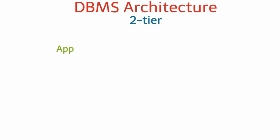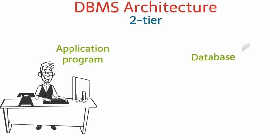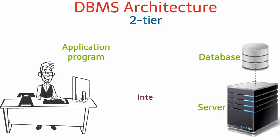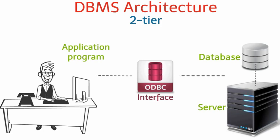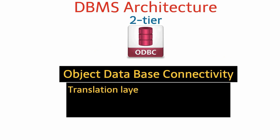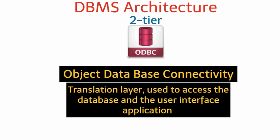In two-tier architecture, the application program runs on the client side and the database is stored on the server. An interface called ODBC connects the application program and the database on the server. ODBC stands for Open Database Connectivity. It is a translation layer used to access the database and the user interface application.